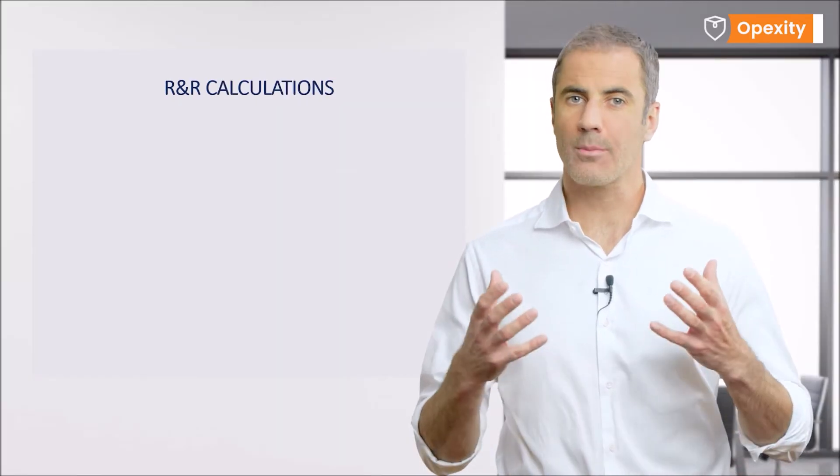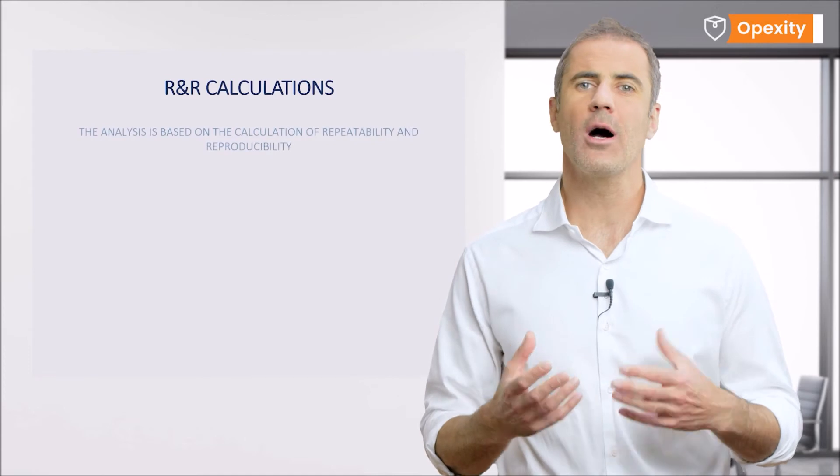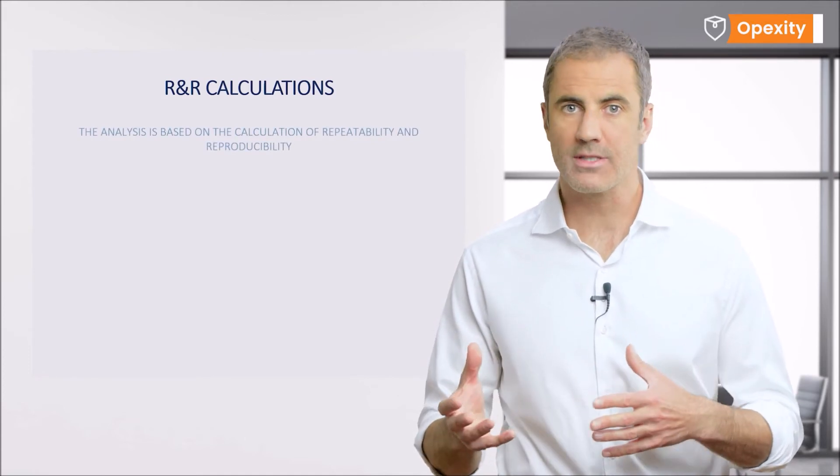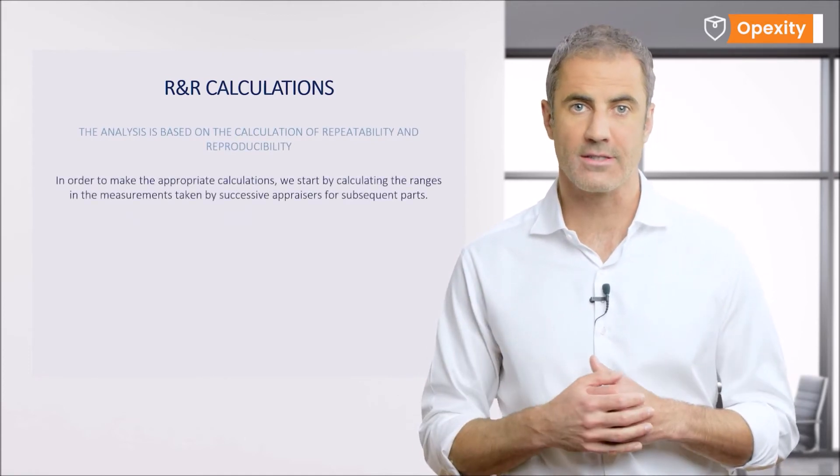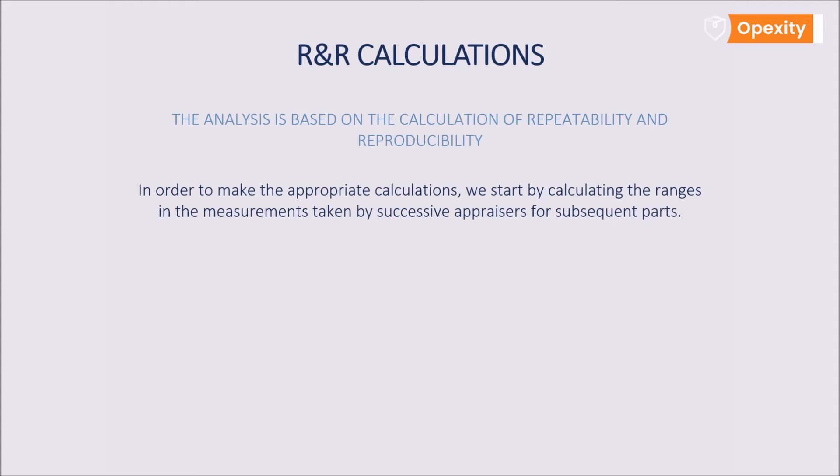In order to make the appropriate calculations, we start by calculating the ranges in the measurements taken by successive appraisers for subsequent parts. Having such data at hand, we are able to calculate the average of the range for each appraiser. We therefore mark each appraiser A, B, C, and obtain the following ranges: RA, RB, RC.